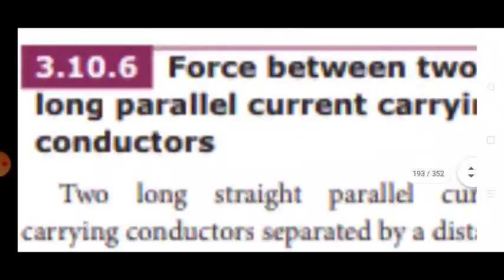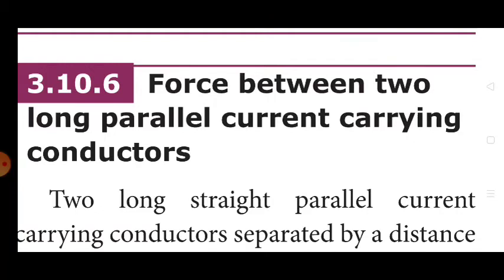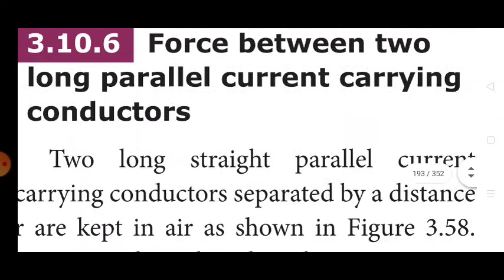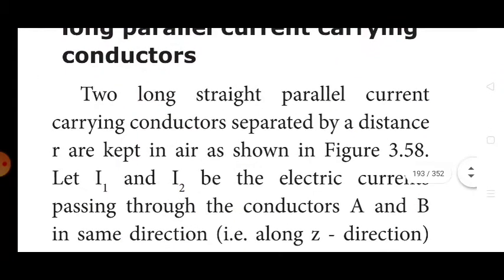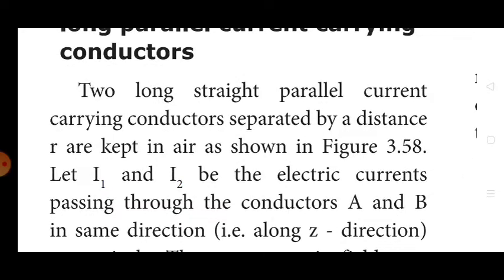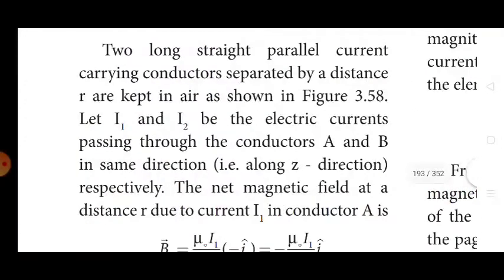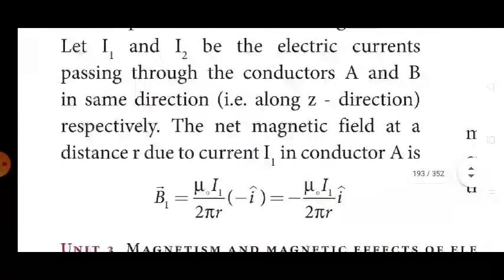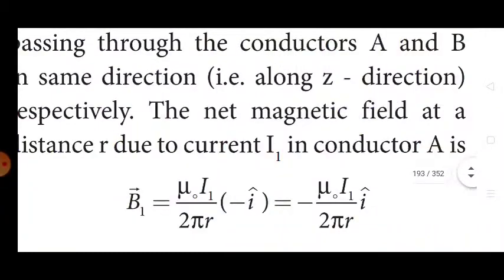Force between two long parallel current carrying conductors. Two long straight parallel current carrying conductors separated by a distance r are kept in air. Let I₁ and I₂ be the electric current passing through conductors A and B in the same direction, along the x-direction. The net magnetic field at a distance r due to current I₁ in conductor A is: B₁ vector = −(μ₀I₁)/(2πr) î, that is along the negative î direction.